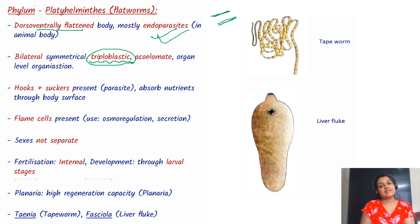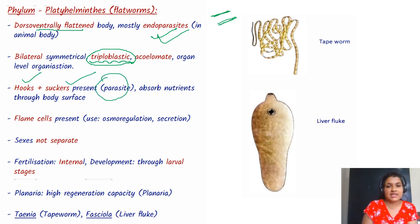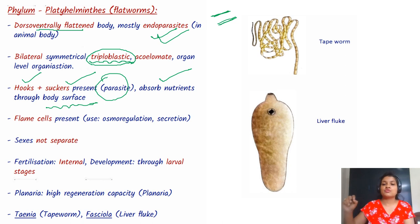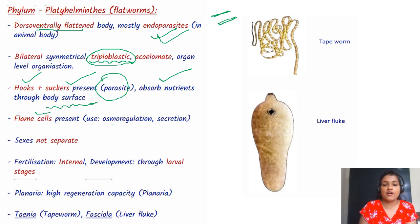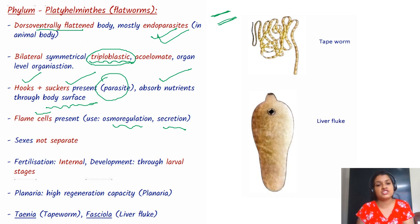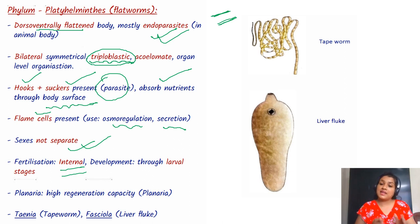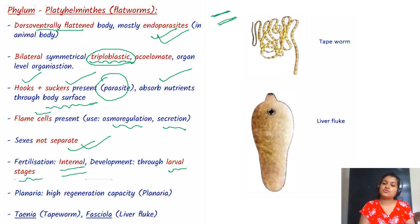They are mostly endoparasites and have hooks and suckers. They absorb nutrients through the body surface. They have flame cells which are used for osmoregulation as well as excretion. Fertilization is internal and development is through larval stages.